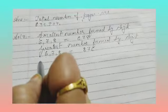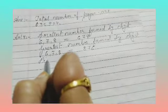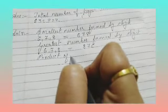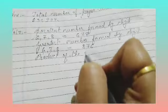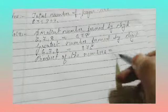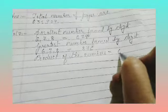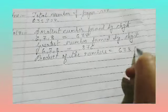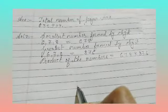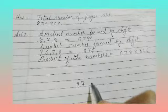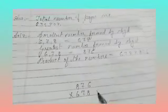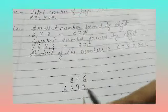Product of the numbers. Both numbers' product: 678 into 876. Okay children, so we have 876 into 678. 8 times 8 is 64, so 8 carry 4.